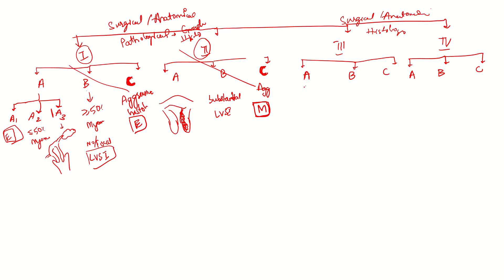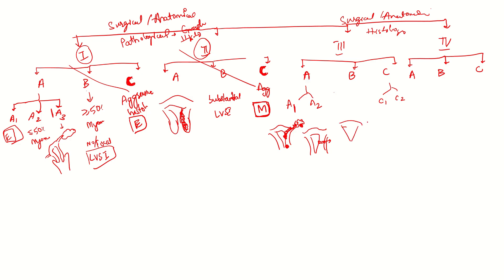Stage 3 is a purely anatomical or surgical classification with no distinction based on histology aggressiveness. Stage 3A1 is extension of tumor into the adnexa — fallopian tube or ovary — either by direct extension or metastasis. Stage 3A2 is extension into the sub-serosa or through the serosa. Stage 3B involves the pelvic peritoneum or parametrium. Stage 3C1 involves pelvic lymph nodes, and 3C2 involves para-aortic lymph nodes below the level of renal vessels.